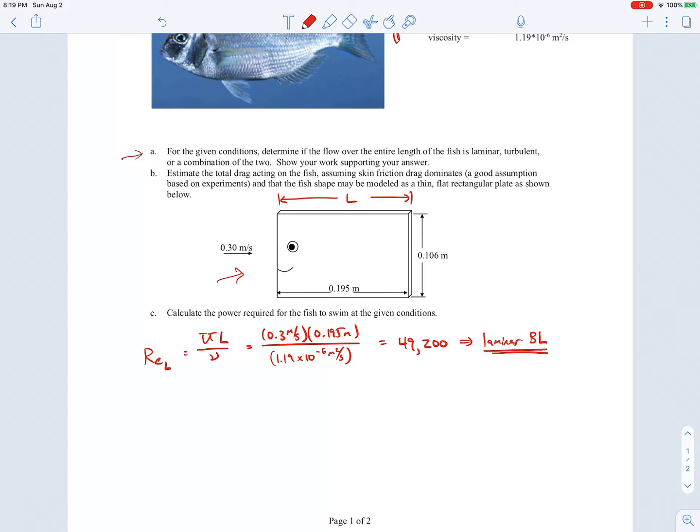To find the drag, remember that there are two sides to this fish, so the drag on two sides of the fish will be two times the drag on one side. The drag on one side will be the drag coefficient times the dynamic pressure based on the free stream speed times the area of one of the sides.